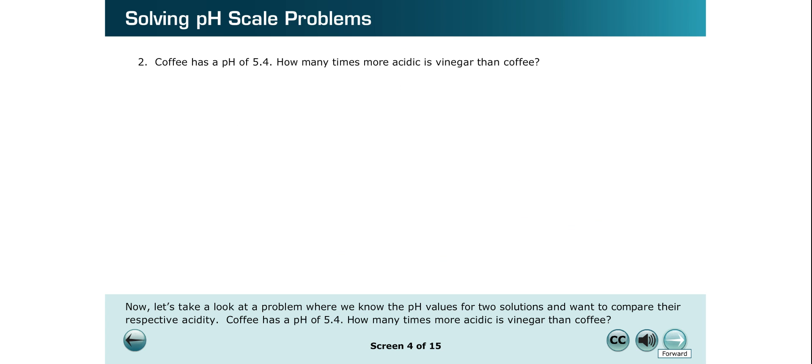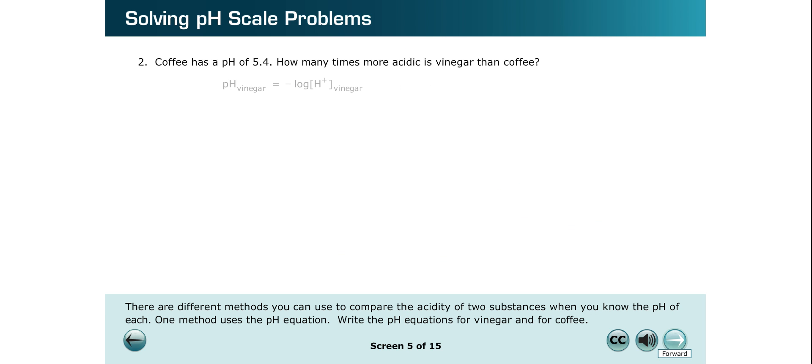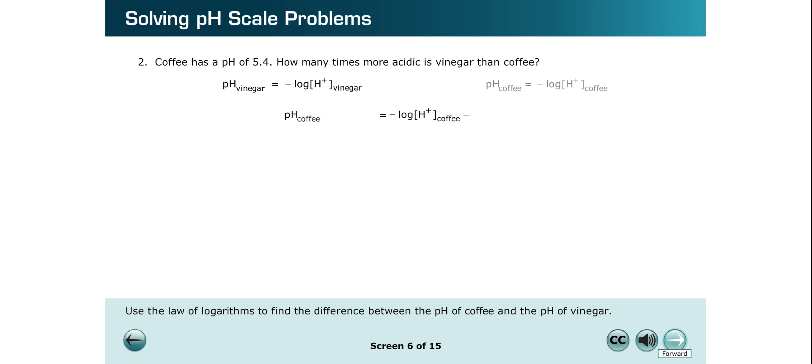There are different methods you can use to compare the acidity of two substances when you know the pH of each. One method uses the pH equation. Write the pH equations for vinegar and for coffee. Use the law of logarithms to find the difference between the pH of coffee and the pH of vinegar.